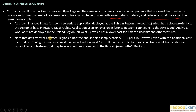Note that data transfer between regions is not free — consider this while deciding on a region. In this example, the cost is $0.115 per GB when transferring data between these regions. However, even with this additional cost factored in, running the analytical workload in Ireland is still more cost-effective than running it in Bahrain. You can also benefit from additional capabilities and features that may not yet be released in the Bahrain region.